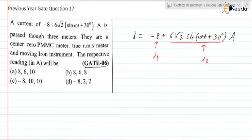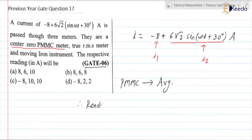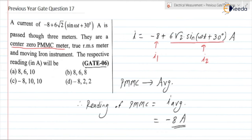A center-zero PMMC meter means at the center point of the scale there is a zero notation; pointer moving right shows positive reading, pointer moving left shows negative reading. As we know in the case of a PMMC instrument, it measures only the average value. The average value of the sinusoidal term is zero, so the reading is minus 8 ampere only. Therefore the PMMC reading is minus 8 ampere.